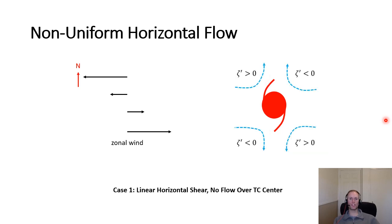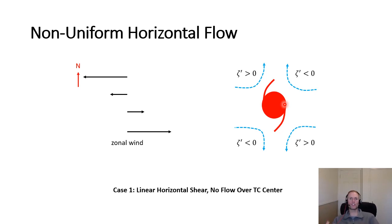Each advection pattern is associated with its own unique horizontal flow anomalies. Positive advection produces positive vorticity anomalies (zeta prime > 0) and thus cyclonic flow anomalies shown by blue arrows to the northwest and southeast. Negative vorticity advection anomalies to the southwest and northeast produce negative vorticity anomalies (zeta prime < 0) and anomalous anticyclonic flow. This creates a deformation flow with an axis of contraction from west to east and an axis of dilatation from north to south. These flows come to zero right at the center, so in this case there is no net steering flow on the tropical cyclone.